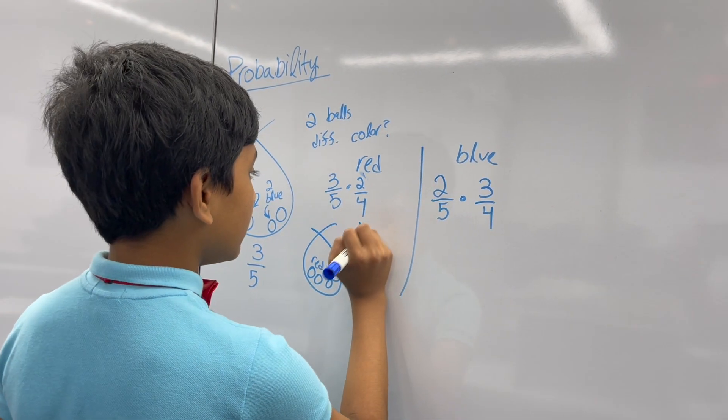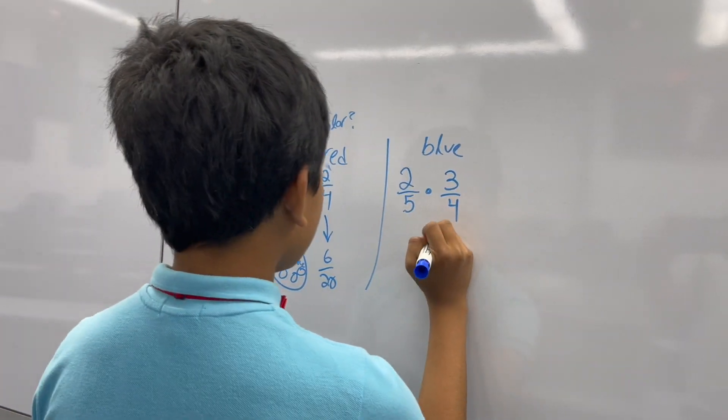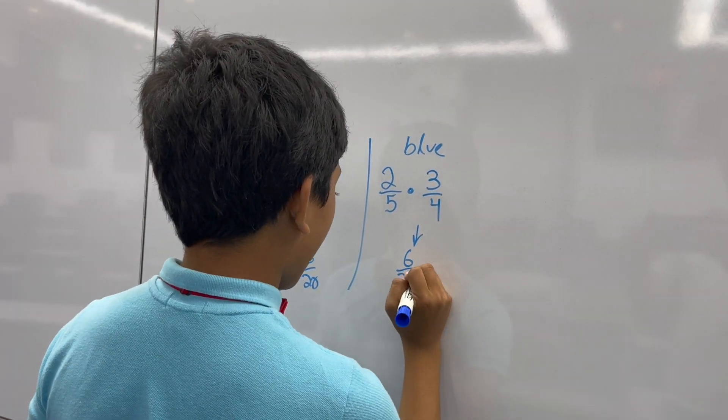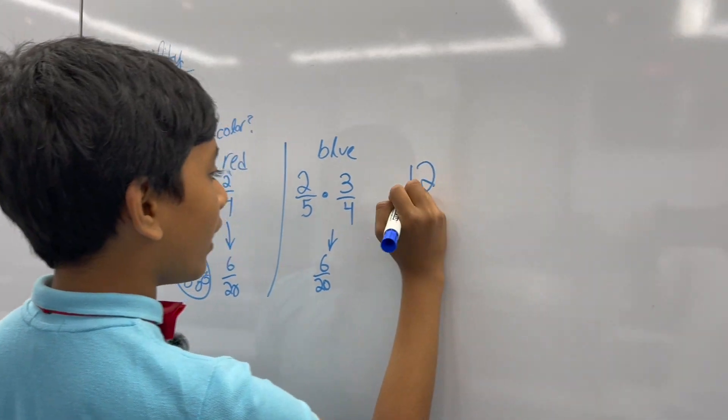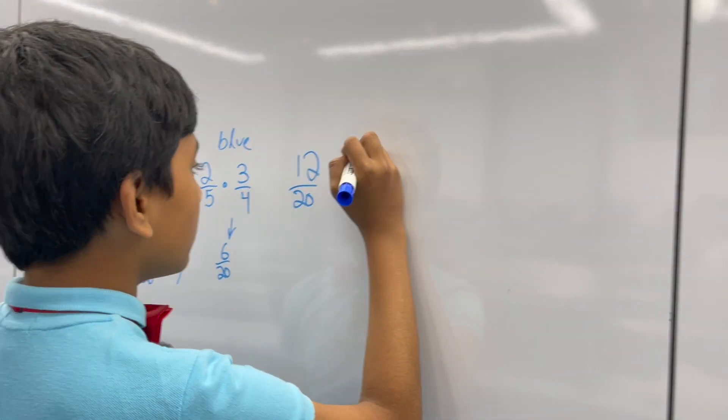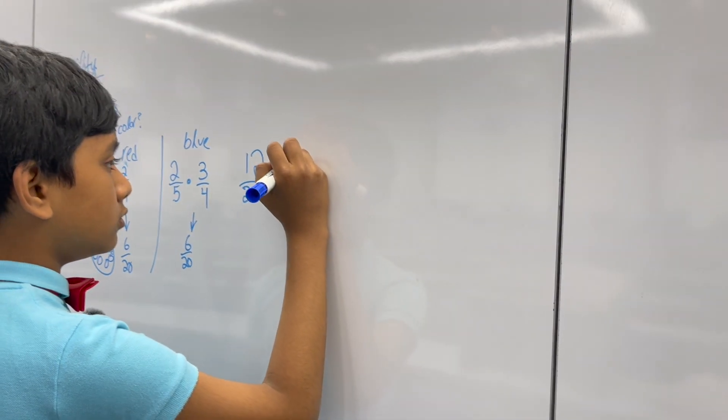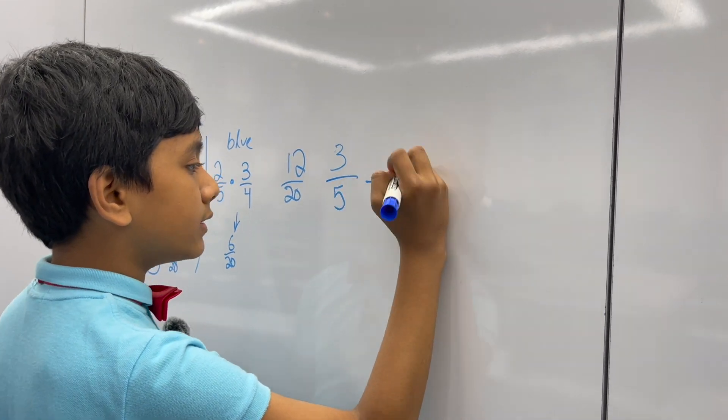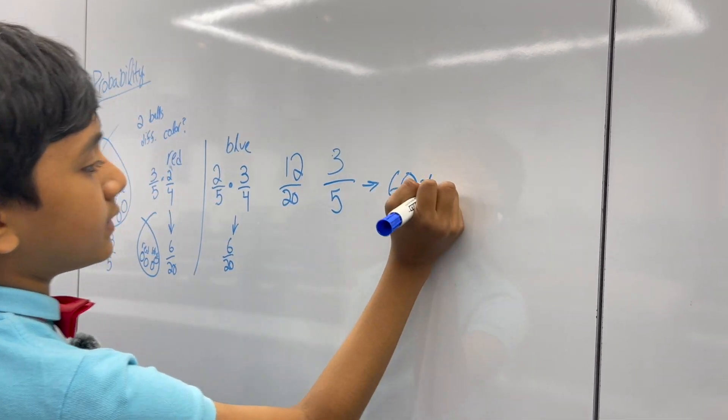So, this is six over twenty, and this is also six over twenty. Adding them together, it gives us twelve over twenty, or three over five, which is a sixty percent chance.